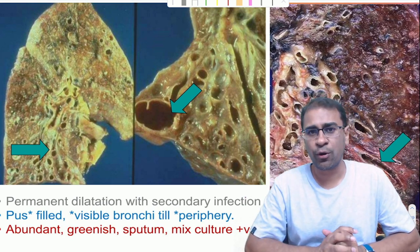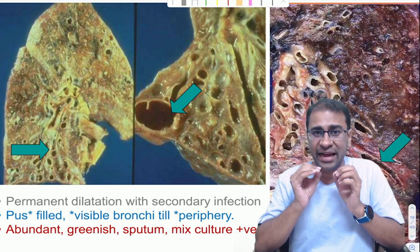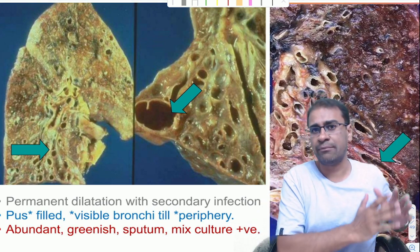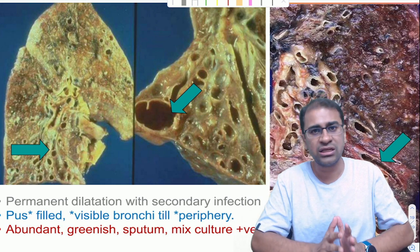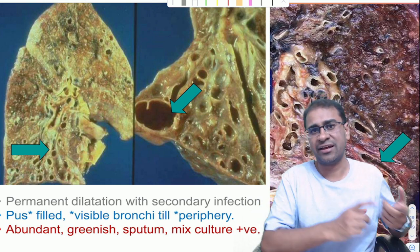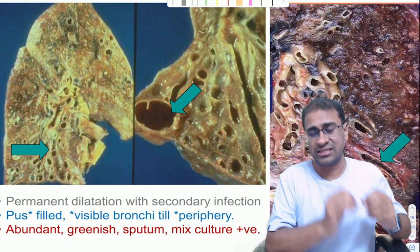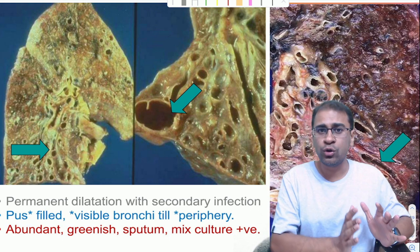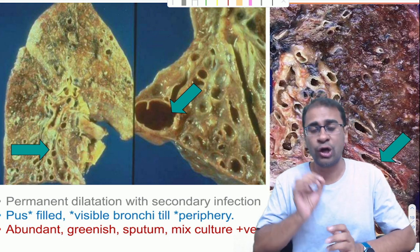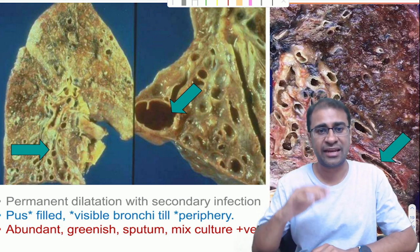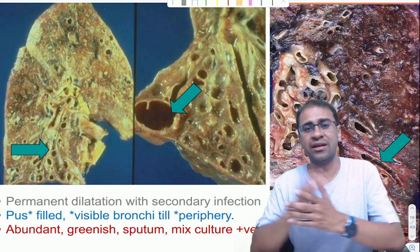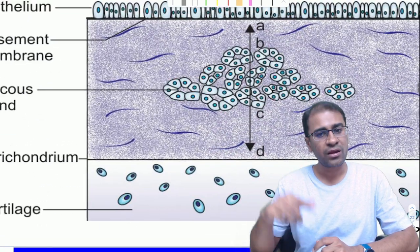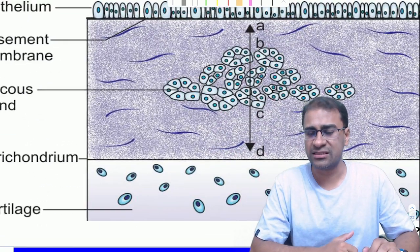Next is bronchiectasis, where there is dilatation and destruction of the large airways due to chronic necrotizing inflammation. This inflammation can be from Staph aureus, tuberculosis, and also congenital conditions such as Kartagener syndrome and cystic fibrosis. It can also occur because of foreign bodies and autoimmune diseases. The basic treatment here is antibiotic treatment.